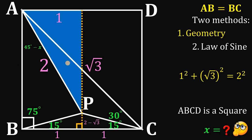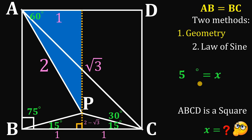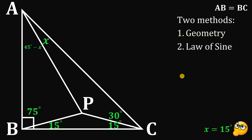Since this is a 30-60-90 right triangle, we know this angle is 60 degrees, and the whole angle is 90 degrees. Therefore, 45 minus X degrees must equal 30 degrees. Solving for X: X equals 45 minus 30 degrees, so X equals 15 degrees. Using the geometry method, the value of angle X is 15 degrees.